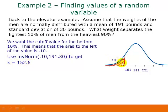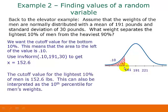So the value right here is 152.6 pounds. So that would be the cutoff for determining the lightest 10% of men. So, in other words, men who weigh less than this would be in the bottom 10%. Men who weigh more than this would be in the top 90% as far as weights. We could also interpret this as the 10th percentile for men's weights.